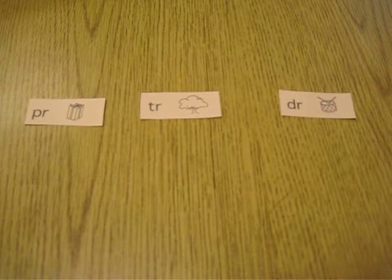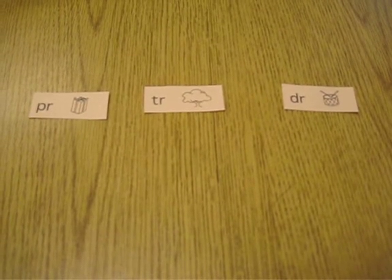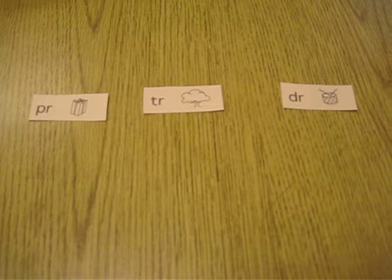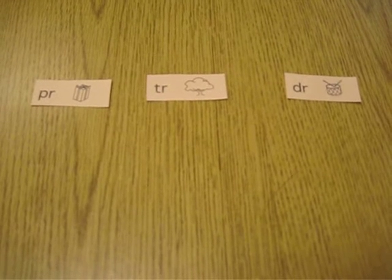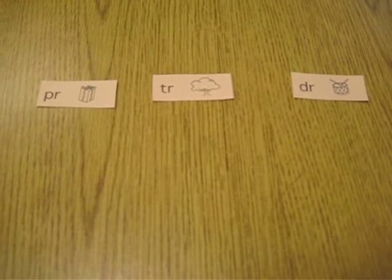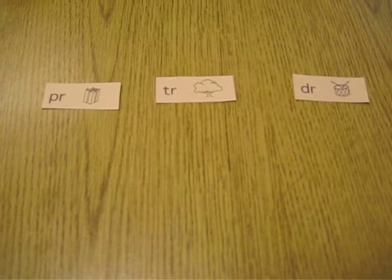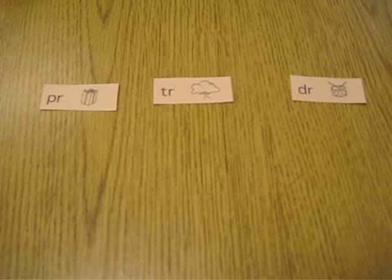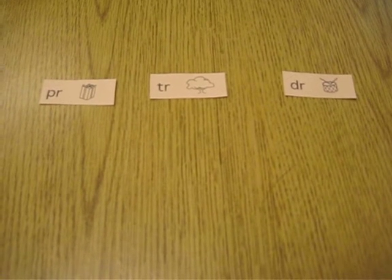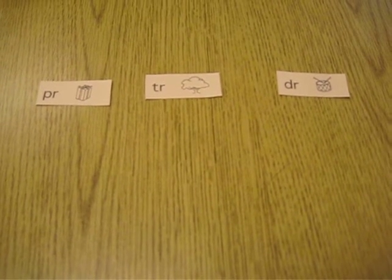This is the B25 word sort. We have our headers: PR like present, TR like tree, and DR like drum. See if you can sort your pictures and then check your work.